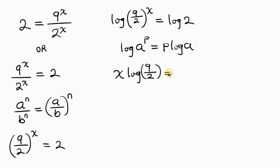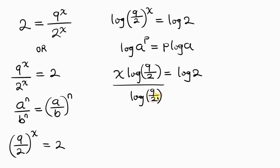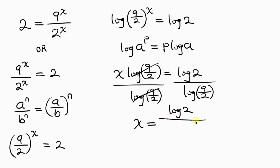This equals log 2 on the right hand side. To isolate x, we divide both sides by log of 9 over 2. The log of 9 over 2 cancels on the left, leaving x equal to log 2 over log of 9 over 2.